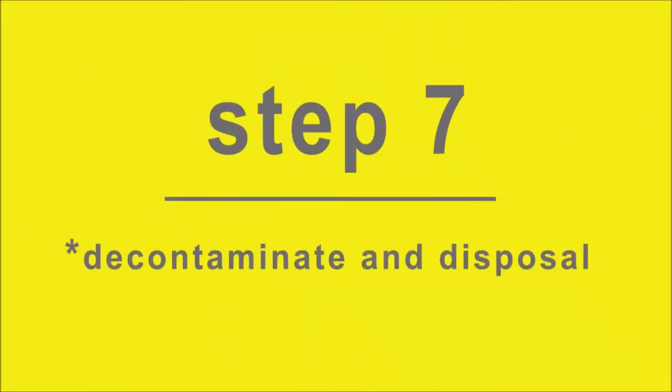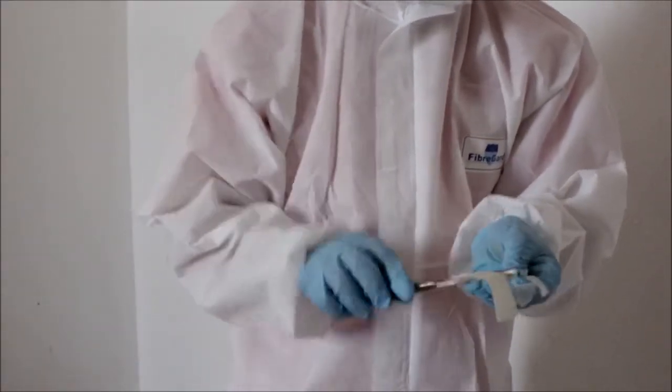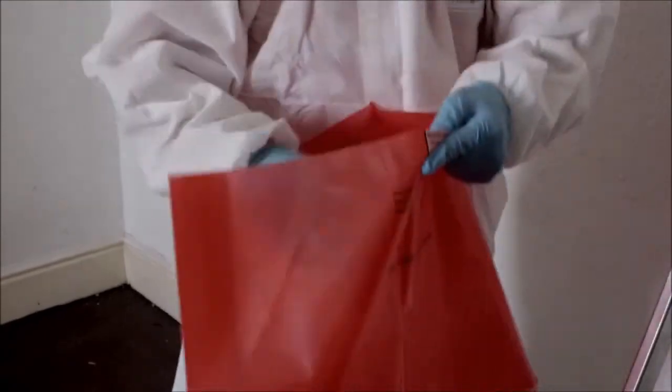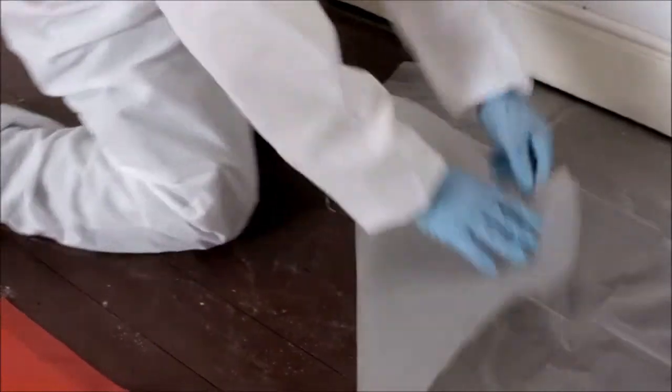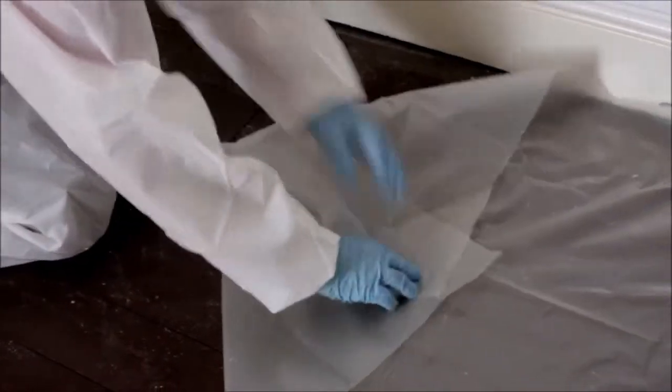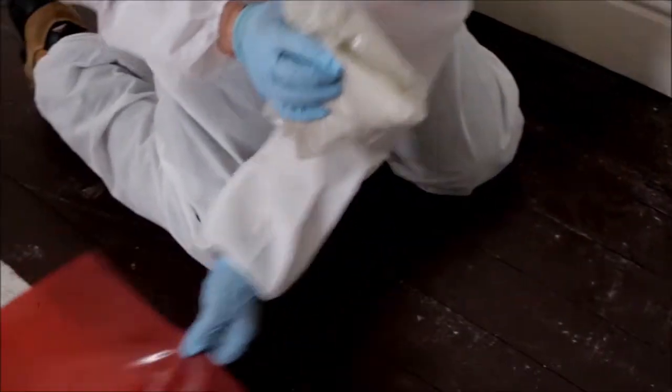Step 7. Decontaminate and Disposal. Thoroughly clean the pliers or chisel with the wet wipe provided and place the wet wipe in the red asbestos bag. Carefully fold inward the polythene sheet and place this into the red asbestos bag.